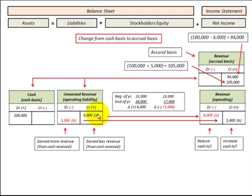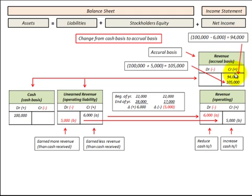Let's look at the case where our unearned revenue increased by $6,000 during the year. That means our revenue would have been reduced by $6,000. So we take our $100,000 cash basis and subtract that reduction in revenue of $6,000, and we get $94,000 revenue on an accrual basis.